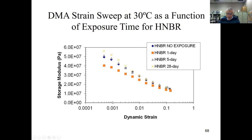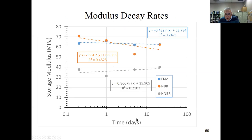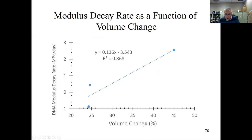DMA strain sweep at 30°C as a function of exposure time for FKM shows modulus decreasing in the 1–5% strain range with increasing exposure. For NBR, all modulus results of exposed samples are lower than unexposed across one-day, five-day, and 28-day exposures. For HNBR, a similar pattern is observed. Taking storage modulus at 0.1% strain as a function of exposure time for NBR, HNBR, and FKM, the modulus decay rate correlates with the initial volume change — NBR with 45% volume change shows the fastest decay.